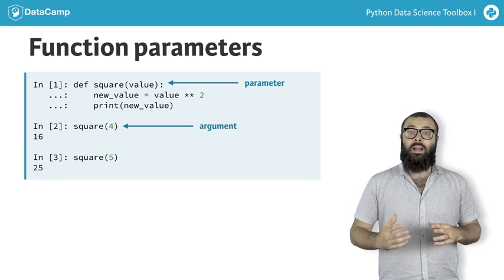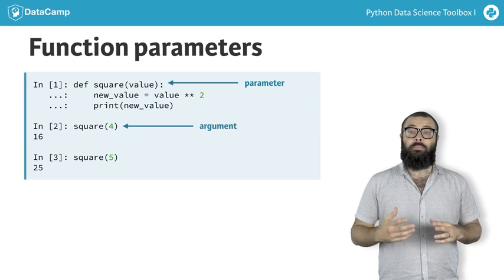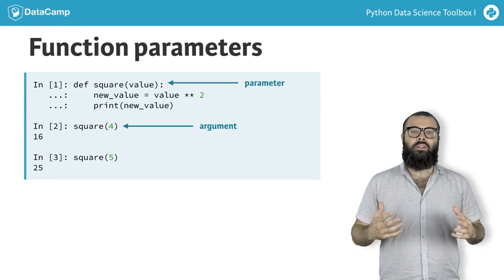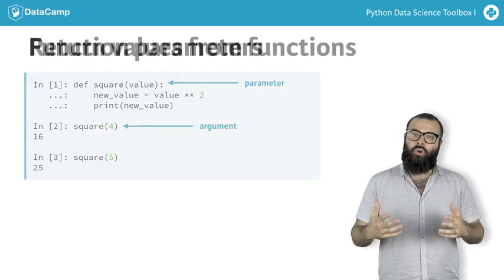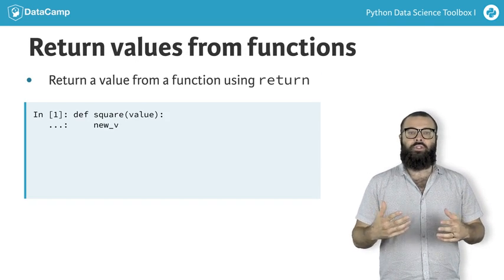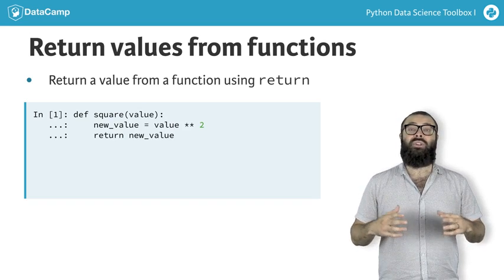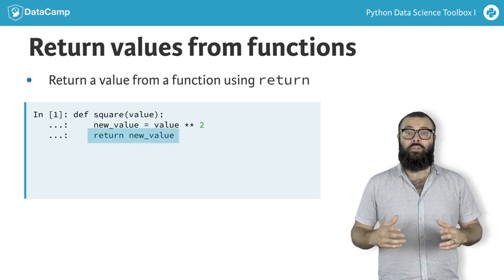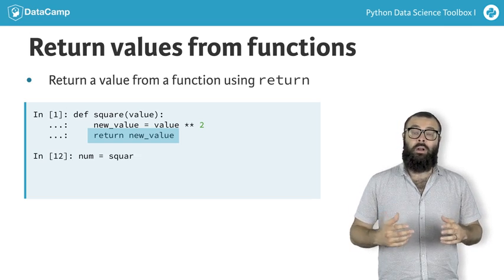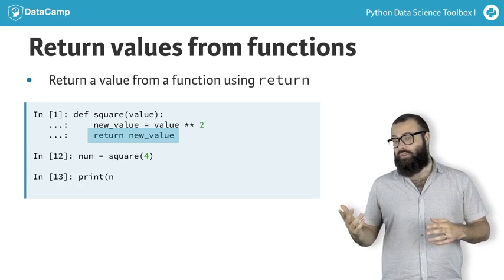The function square now accepts a single parameter and prints out its squared value. But what if we don't want to print that value directly, and instead we want to return the squared value and assign it to some variable? You can have your function return the new value by adding the return keyword, followed by the value to return. Now, we can assign to a variable num the result of the function call, as you see here.